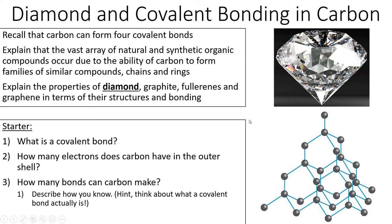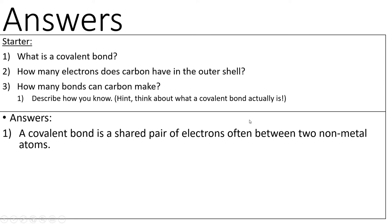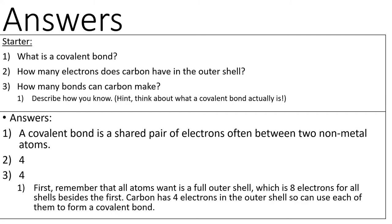Let's look at some answers. What is a covalent bond? A covalent bond is a shared pair of electrons, often between two non-metal atoms, because non-metals are the ones that form covalent bonds. How many electrons does carbon have in its outer shell? Four - because it's in group four of the periodic table, it's got four electrons in the outer shell. How many bonds can carbon make? Also four. All atoms want to get a full outer shell, so with carbon's outer shell, a full outer shell would be eight electrons. Carbon shares its four electrons with four other atoms, so it feels like it has eight electrons in the outer shell, using each of those four electrons to form a covalent bond - four covalent bonds.